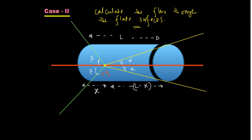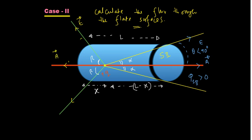For surface S2 (right face), the electric field and area vector are both pointing right, so θ is acute and flux through S2 is positive (greater than zero). For surface S1 (left face), the electric field also points outward toward that surface and the area vector points left — the angle between them is also acute, so flux through S1 is also positive and greater than zero.